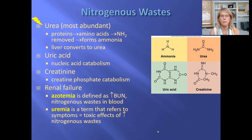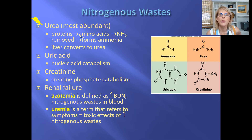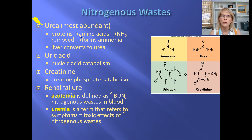We learned that urea is the most abundant, and urea comes from the breakdown of proteins — specifically when amino acids, instead of being recycled, get used as energy by the mitochondria. We learned that the ammonia from the breakdown of amino acids gets turned into a significantly less toxic product, urea, by the liver, so that liver dysfunction can cause the symptoms of ammonia toxicity.